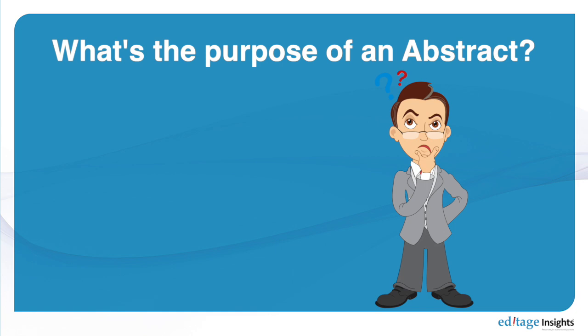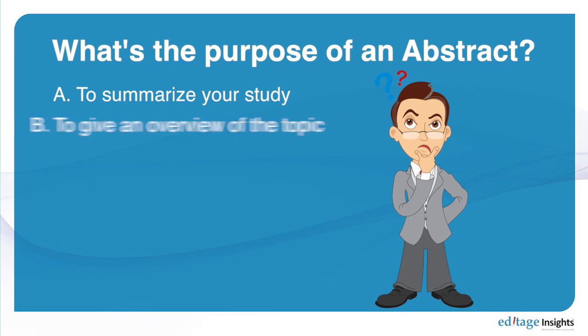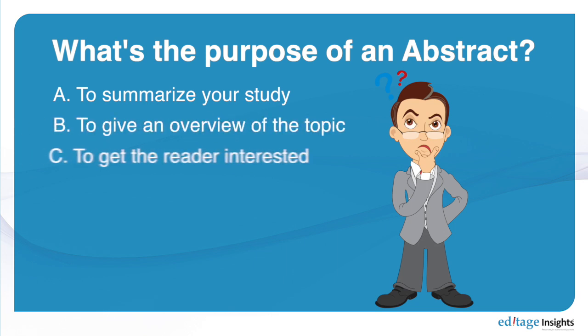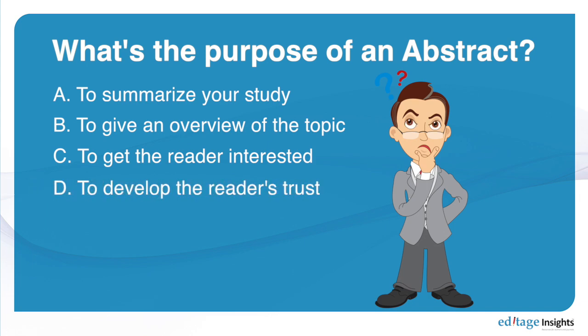What's the most important purpose of an abstract? Is it a simple summary, an overview of the topic to be discussed, to get the reader interested in the paper, to develop trust between the author and the reader, or all of the above? When you are searching for information you might not be able to read the whole paper, so you read the abstract. You need to know if your time is going to be spent wisely, or your money if you have to purchase the paper. So the most important purpose is to develop trust.